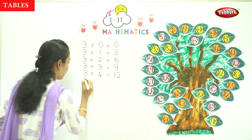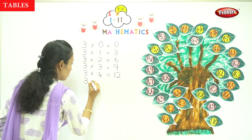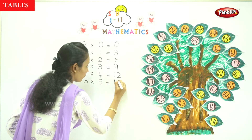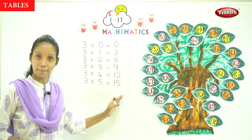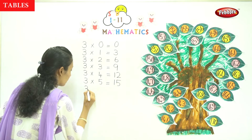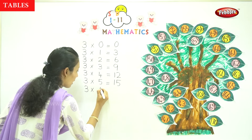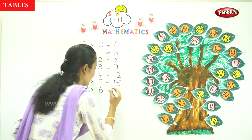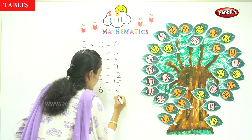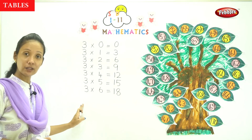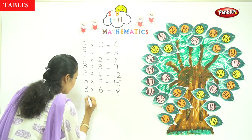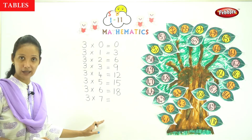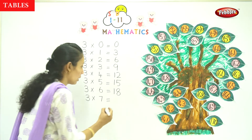Now next we have 3 into 5. That is 3 into 5. That is correct. 3 into 5 equals 15. That is 3 into 6. That is 3 into 6 is equal to 18. Next one: 3 into 7. 3 into 7.